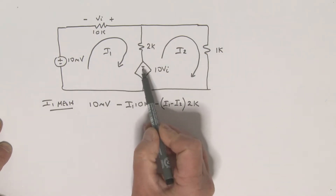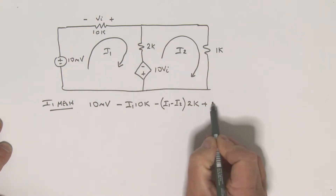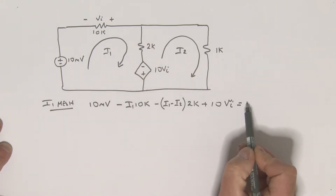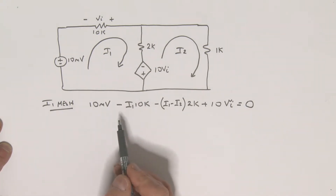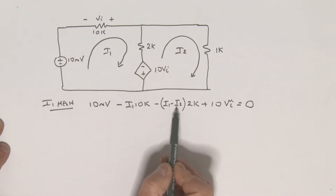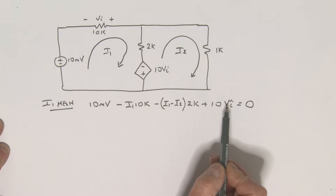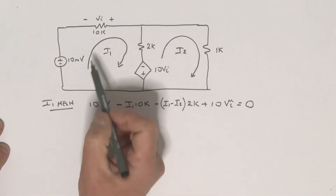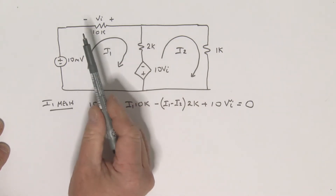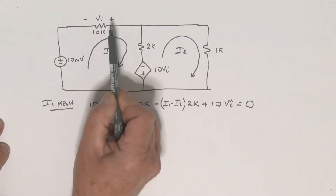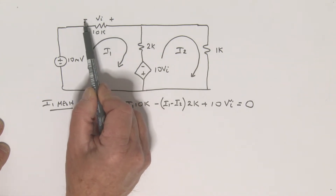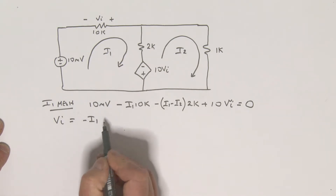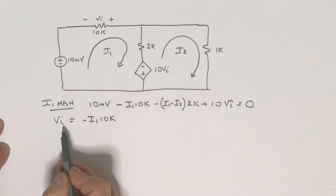Then there's a last voltage — going from minus to plus, so it's +10 times vi. All of that equals zero, completing the i1 mesh loop. Now, i1 and i2 are unknowns, and we also have the vi term. We need to express vi in terms of i1. This current goes in one direction, defining a voltage plus-to-minus, but vi is defined the opposite way, so vi = −i1 × 10k.